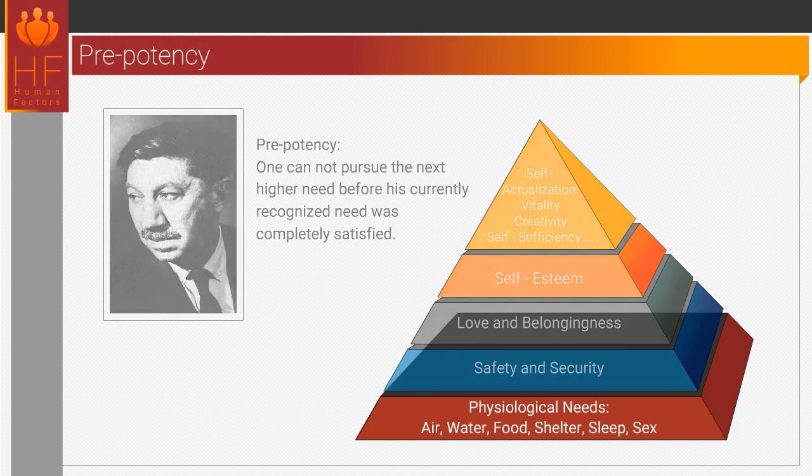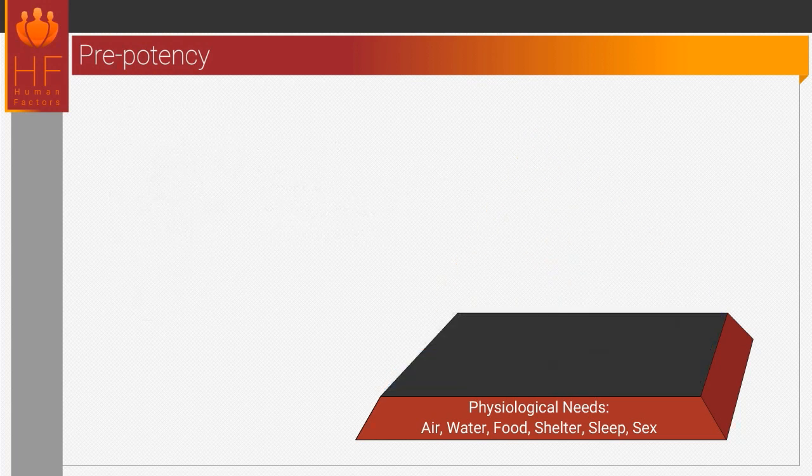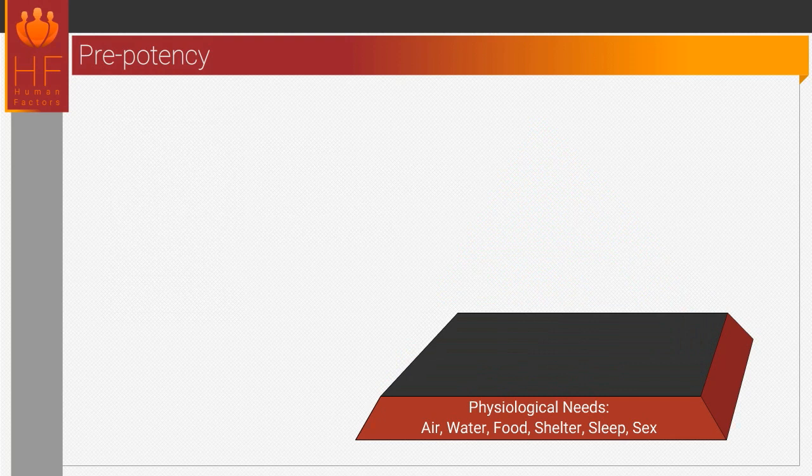Maslow's hierarchy makes sense in general terms. If I'm preoccupied with physical needs, I'm usually not going to be interested in self-esteem needs, for example.